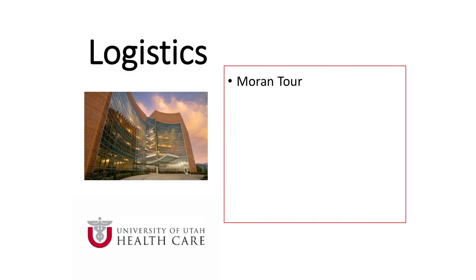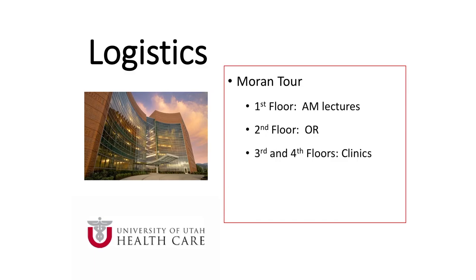In terms of logistics, here is a quick overview of the Moran. AM lectures are held in the auditorium on the first floor. The OR is located on the second floor, with locker rooms on the north end where you will also find scrubs. Clinics are on the third and fourth floors at the Moran; however, be aware that throughout the rotation you may also be working in Moran satellite clinics throughout the valley. Administration offices are located on the fifth floor, and if you get hungry, the Judge Cafe is located on the sixth floor.